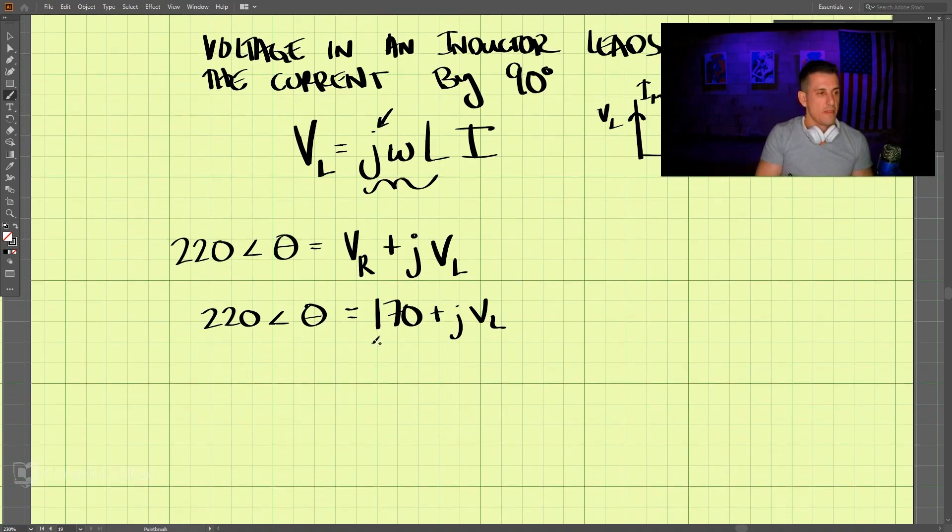Transforming this into polar coordinates, we have the square root of 170 squared plus VL squared. That must equal 220.